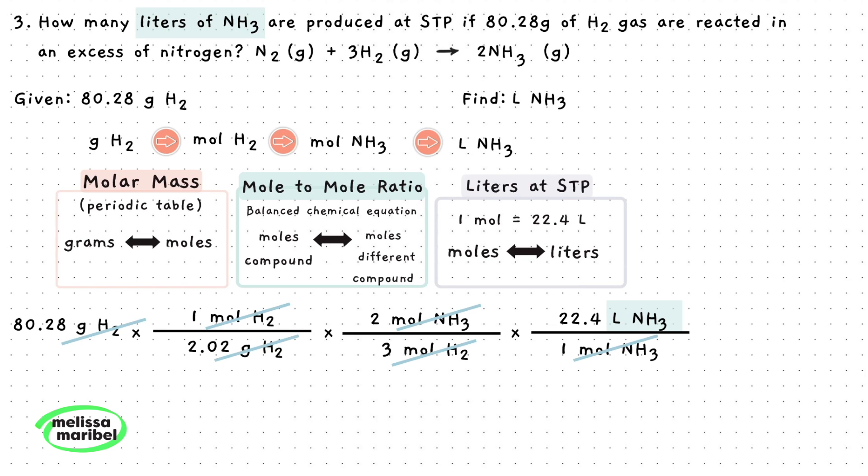To avoid calculator mistakes, we will multiply the numerators separately and denominators separately. Then divide to get this. Don't forget to round to the lowest amount of sig figs, which would be 4. This is our final answer.